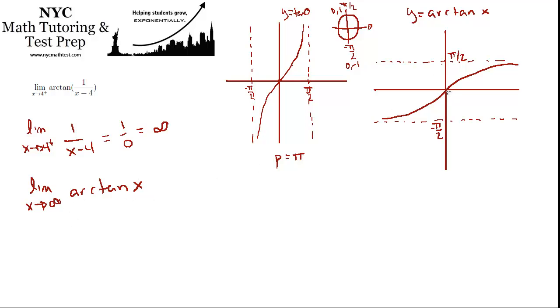And for that, we come right back to our graph. As 1 over x minus 4 becomes infinitely large, so think of very large numbers on the x-axis, what does the y-coordinate of the arctangent graph approach? While it approaches its asymptote there, it's going to approach pi over 2. And that's the answer.